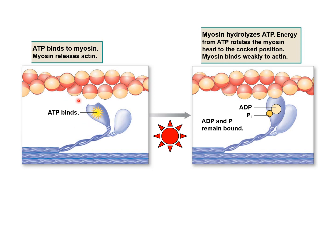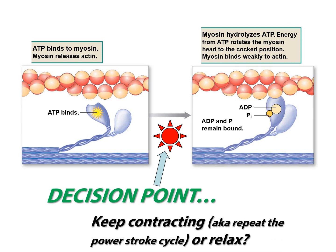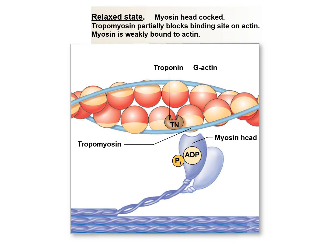When ATP binds, the myosin releases. It hydrolyzes the ATP — we're transferring the potential energy from ATP to the myosin molecule. The myosin molecule is getting cocked in response to ATP hydrolysis, not flexed. When we get to this decision point: if there is calcium present, we keep contracting. If there is no calcium present, that release allows troponin and tropomyosin to slide back over those high-affinity sites. In the relaxed state: loosely bound to actin, ATP hydrolyzed to ADP and inorganic phosphate, and the myosin head is cocked, not flexed.